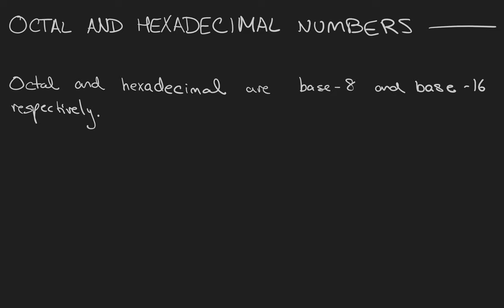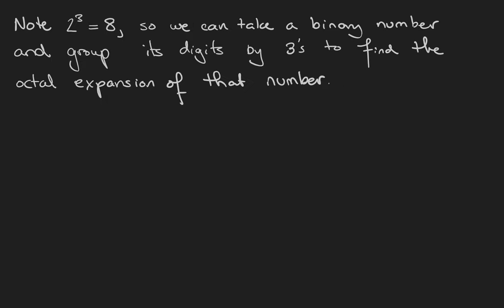Octal is base 8 and hexadecimal is base 16. Because 2³ = 8, we can take a binary number and group its digits into threes to find the octal expansion of that number.